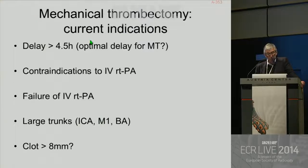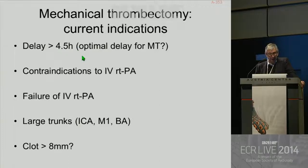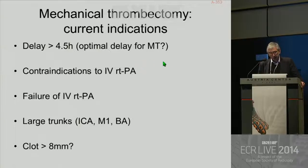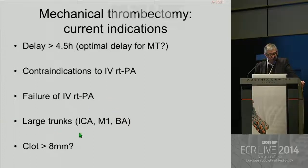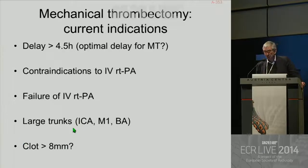What are the current indications for mechanical thrombectomy? When the delay is greater than 4.5 hours — the optimal delay for mechanical thrombectomy is not known, maybe six hours for anterior circulation and possibly more for posterior circulation — and in case of contraindication to IV rtPA, in case of failure of IV rtPA when you have a large trunk occlusion such as ICA, M1, or basilar artery, and maybe when the clot is greater than 8 mm.